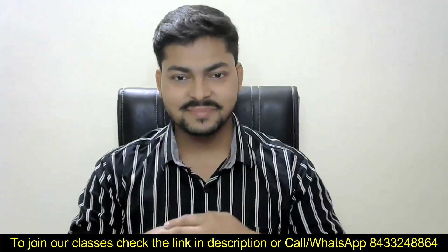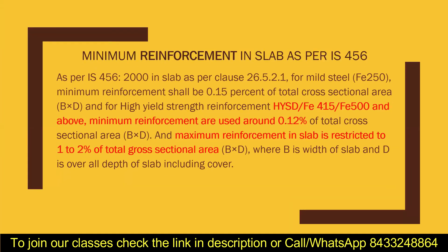So let's start about slab. According to IS 456-2000, clause 26.5.2.1, for mild steel the minimum reinforcement shall be 0.15 percent of the total cross-sectional area, that is breadth multiplied by overall depth. For high-strength reinforcement like HYSD, Fe415, or Fe500, the minimum reinforcement is 0.12 percent of the total cross-sectional area.